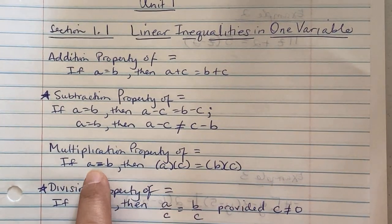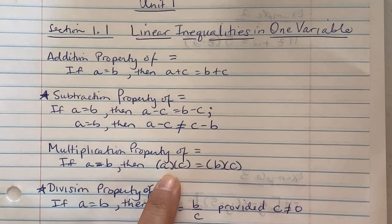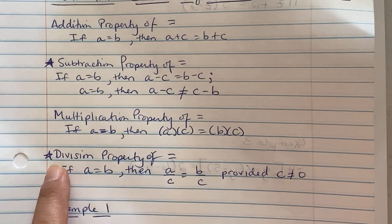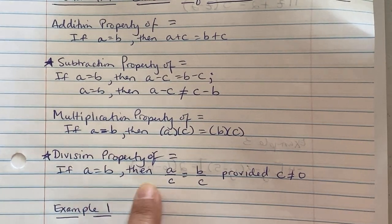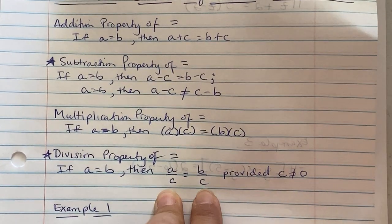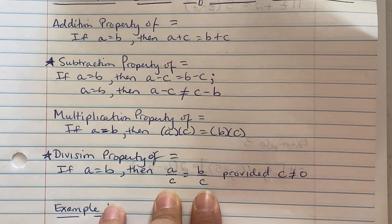Again, the division one is starred also because yes, a over c is equivalent to b over c, provided that c does not equal zero. Remember, c in the denominator means an undefined rule.